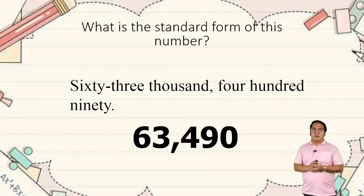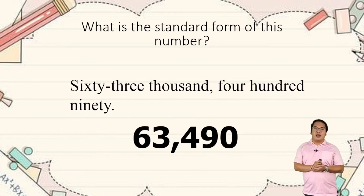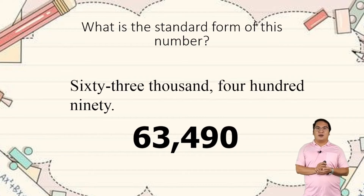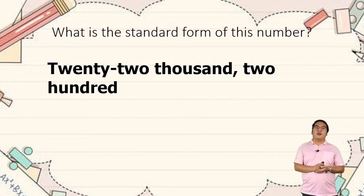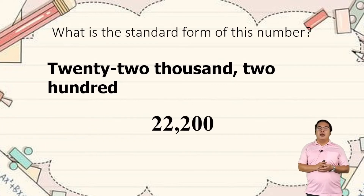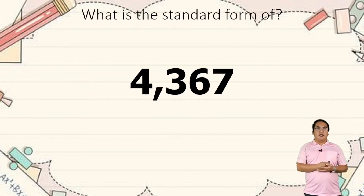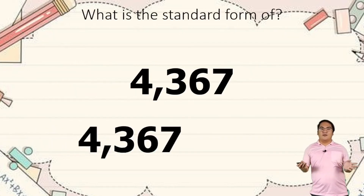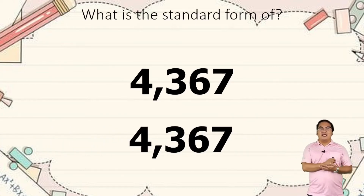What is the standard form of this number? Sixty-three thousand four hundred ninety — we can write this as 63,490. How about the second one? We have twenty-two thousand two hundred, so we write it as 22,200. How about this one? We can write this as 44,367. Standard form is a numerical or number form.